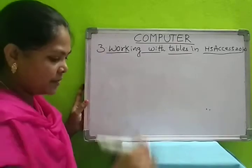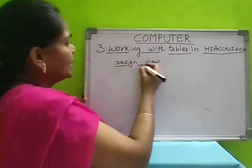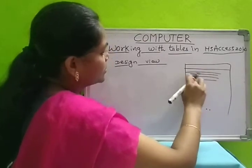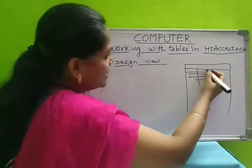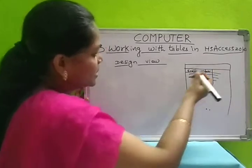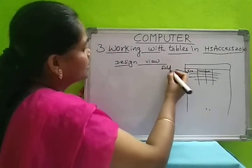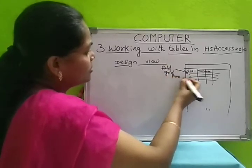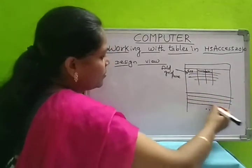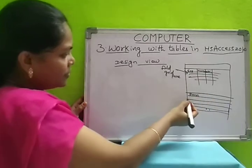Next one is design view. In design view we have two panes — the window will be displayed with columns and rows. Here you can give the column name and its data type. This is called the field grid pane. Here you write the column name and its data type, and below that it will display the format, caption, and other properties.